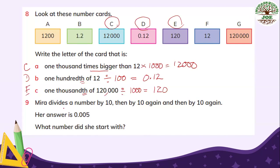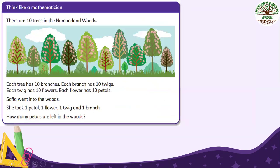And number 9. Mira divides a number by 10. Then by 10. Again. And then by 10. Again. So she divides 3 times of 10. So her divisor is 1,000. 3 zeros. And her answer is 0.005. So what number did she start with? We have to find this starting number. This is called dividend and the largest one for this division. And we can find this dividend by multiplying these divisor and quotient together. So this is 1,000 times larger. So 5 becomes 5 ones.